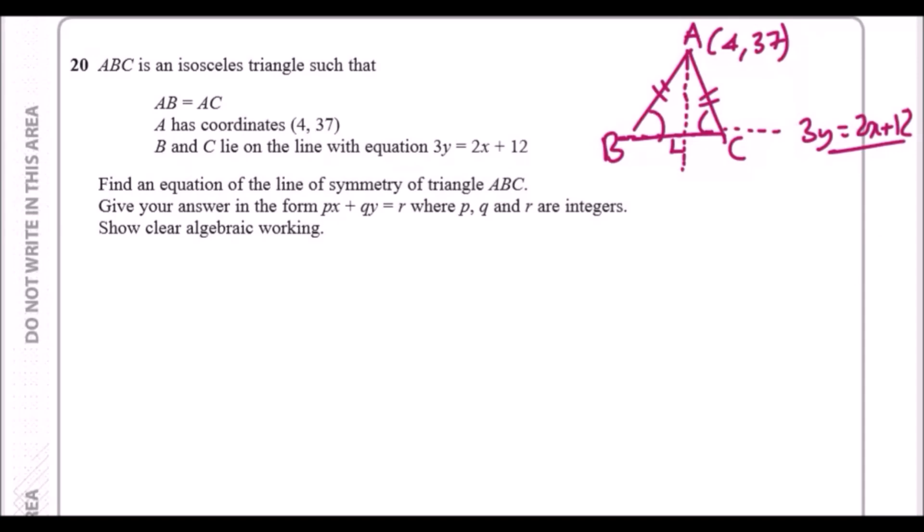So how do we start with this? Since we've got a coordinate on the perpendicular line and we've got a line already here, we should find the gradient of this line. To do that, we need to rewrite this in the usual y = mx + c form, where m is the gradient. It's almost there – we just have to divide this equation by three.